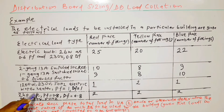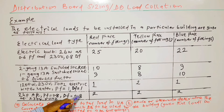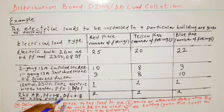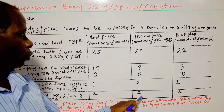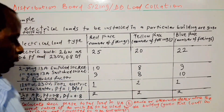For the 2-horsepower air conditioner, the power factor is equal to 0.8 and the diversity factor is also equal to 0.8, at 230 volts, 50 hertz. We have 2 on red phase, 2 on yellow phase, and 2 on blue phase.